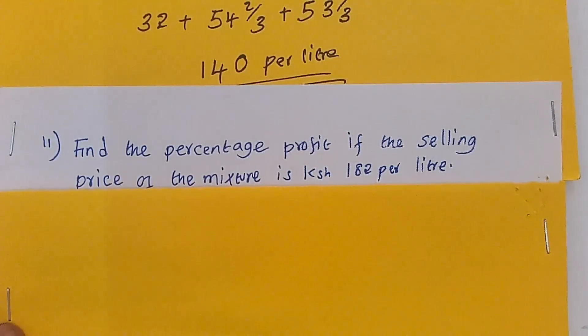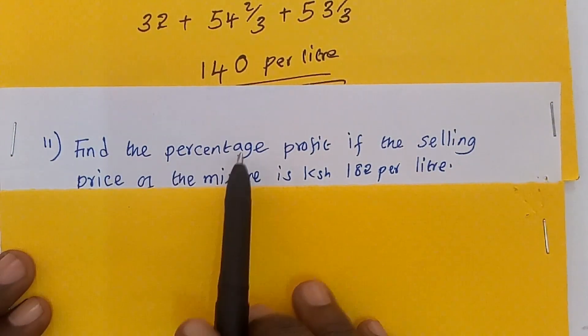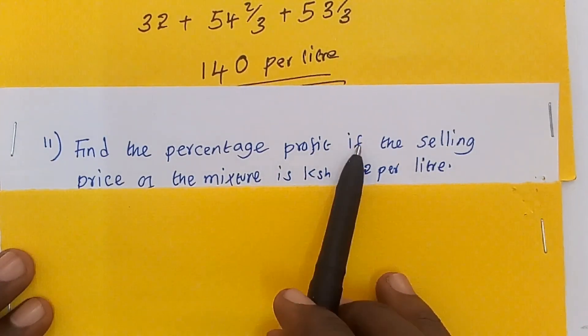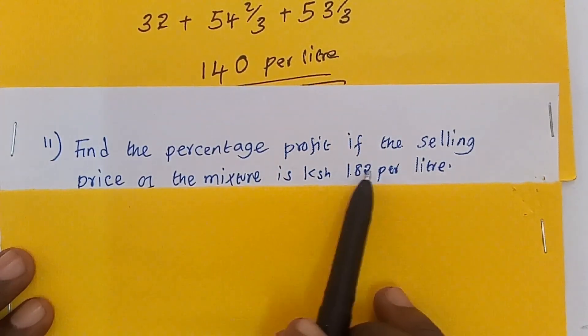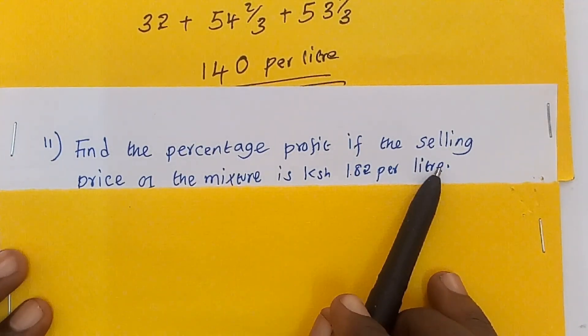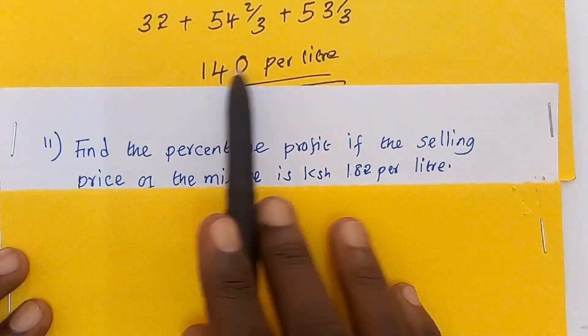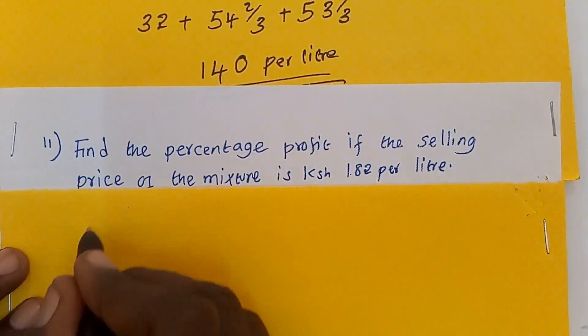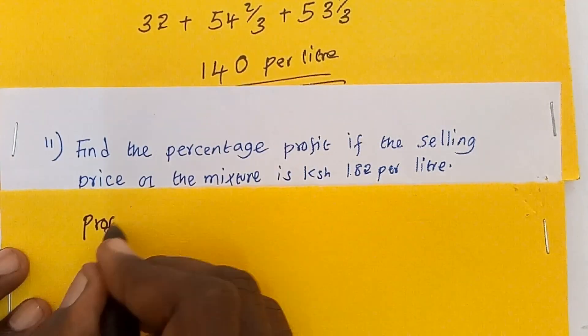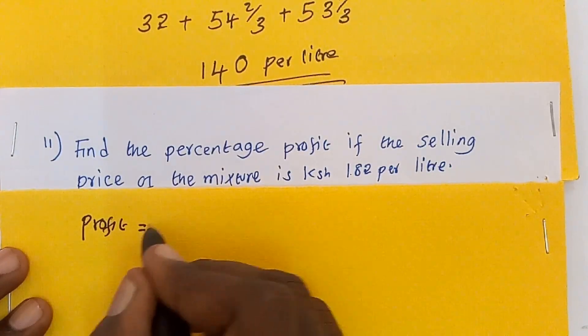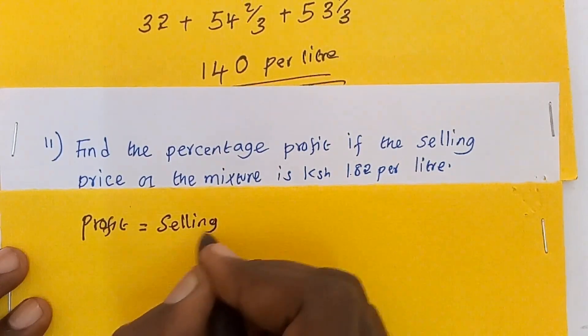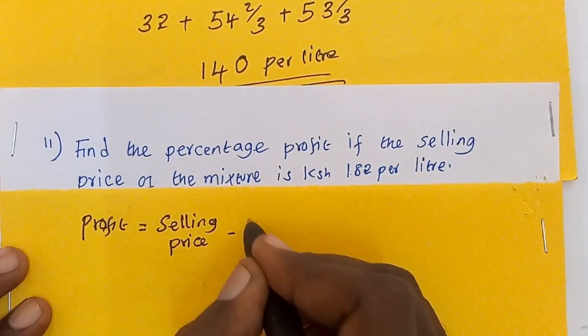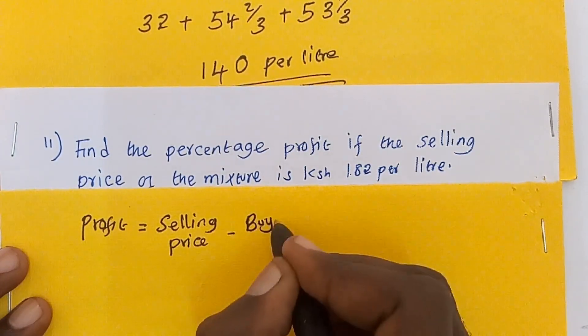Let us go now to number D, which says find the percentage profit if the selling price of the mixture is 182 per liter. Bear in mind that we get the cost price as 140. Therefore, to get the profit, we say profit is equal to selling price minus the buying price, which is the cost price.